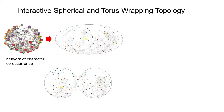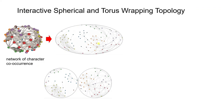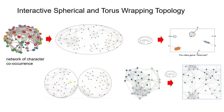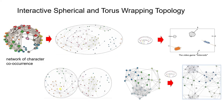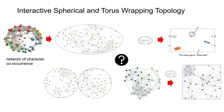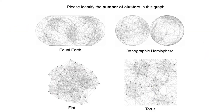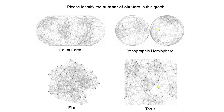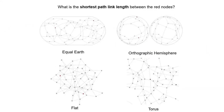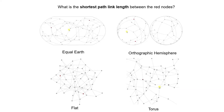A network can wrap around a 2D sphere or a torus continuously — but does a sphere beat a torus? How do they perform in cluster identification, and who is the best performer for path following?